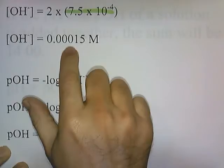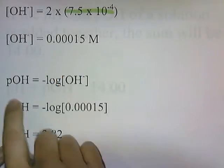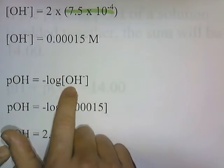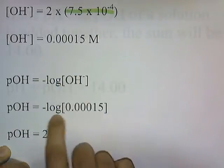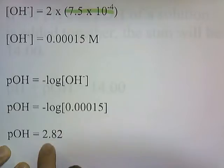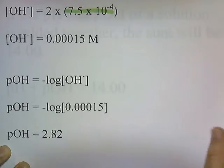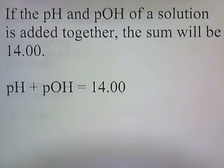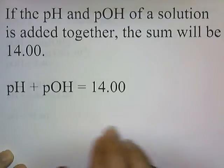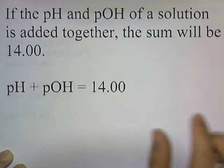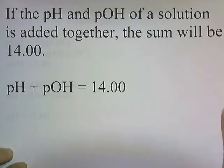Now that we know the concentration of hydroxide, we put it in the formula. pOH is negative log of hydroxide; the concentration of hydroxide is 0.00015, and the negative log of this number is 2.82. If the pH and pOH of a solution are added together, the sum will be 14.00. So here's a formula that's easy to remember: pH plus pOH equals 14. We can use this formula to help solve more types of problems.